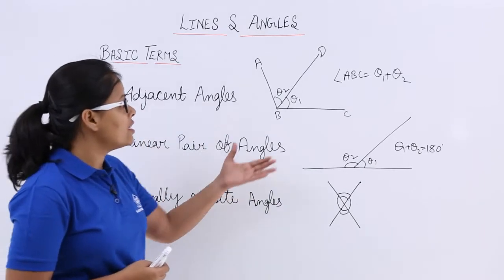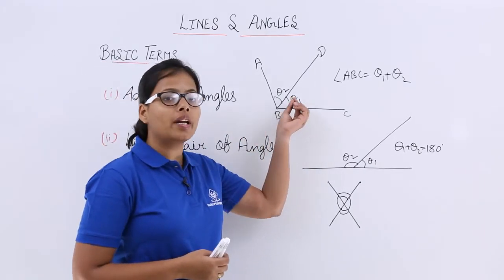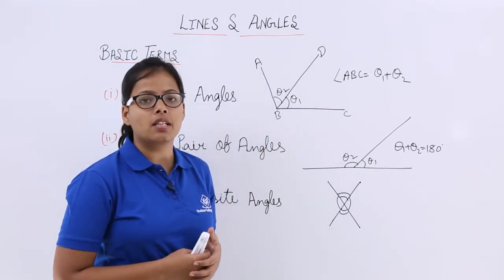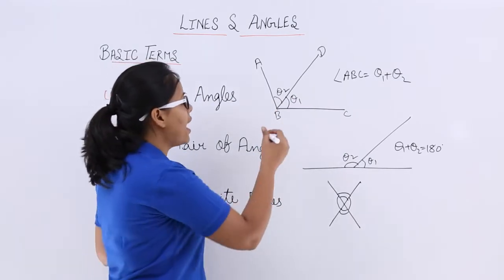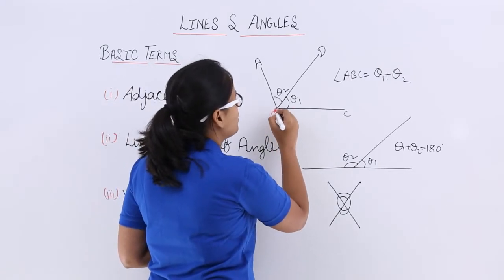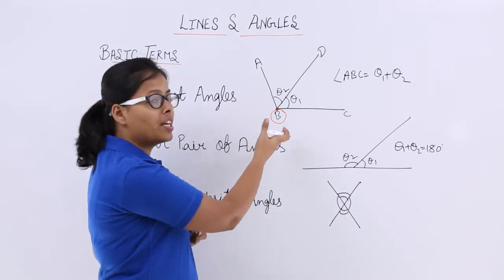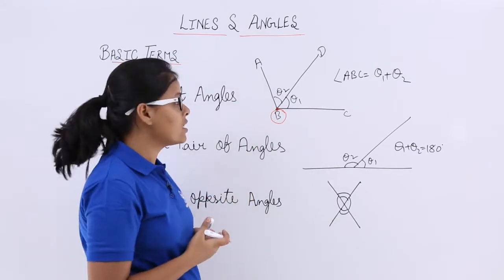Adjacent angles. You can see here that theta1 and theta2 have been said that these are adjacent angles. Why? Because they have common vertex. This is the vertex, a point is known as a vertex. As you have already studied about this in your previous classes.